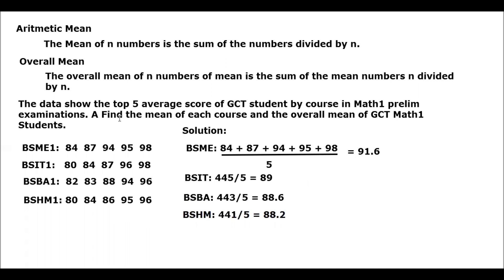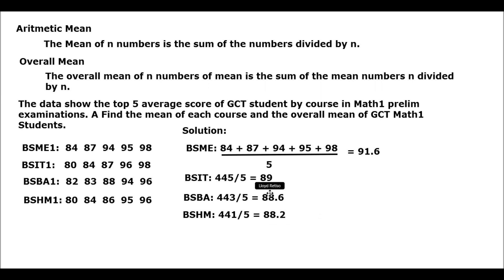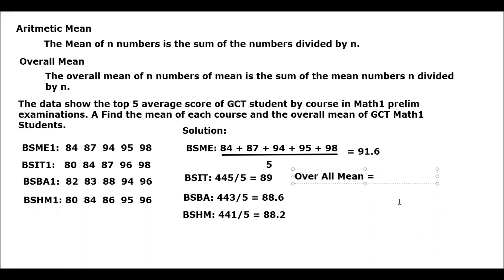Now, find the mean of each course and the overall mean of GCT Math 1 students. The overall mean of n numbers of means is the sum of the mean numbers divided by n. So we sum all the means of these courses and then divide by the number of means. The overall mean is equal to 91.6 plus 89 plus 88.6 plus 88.2.